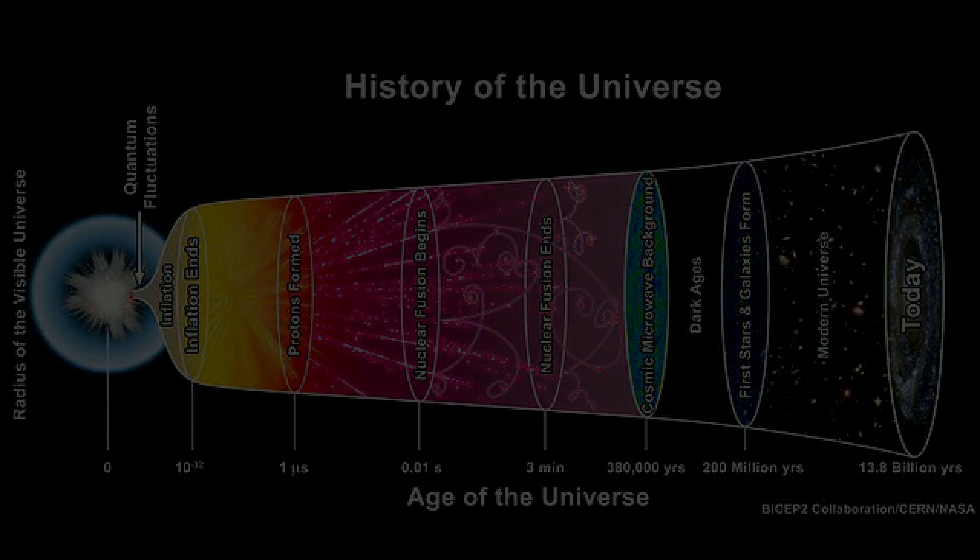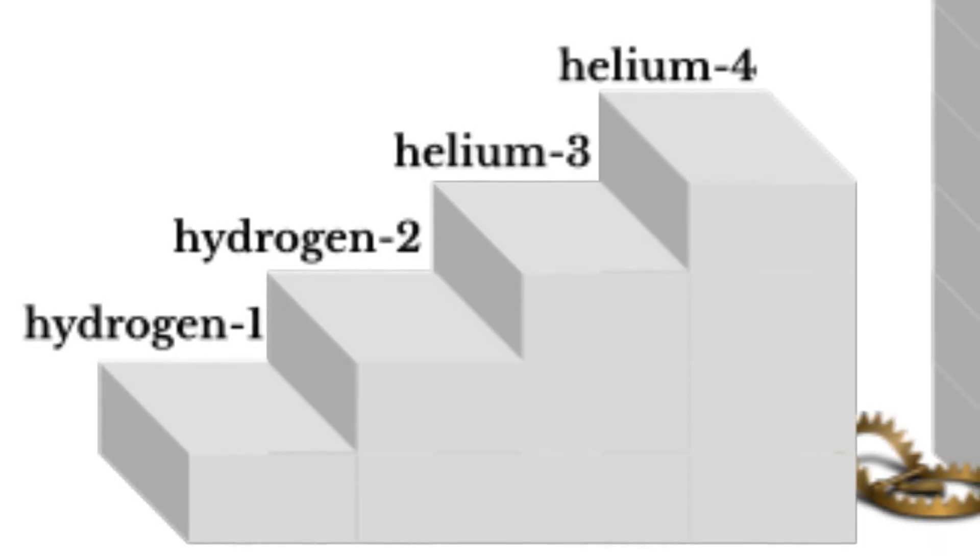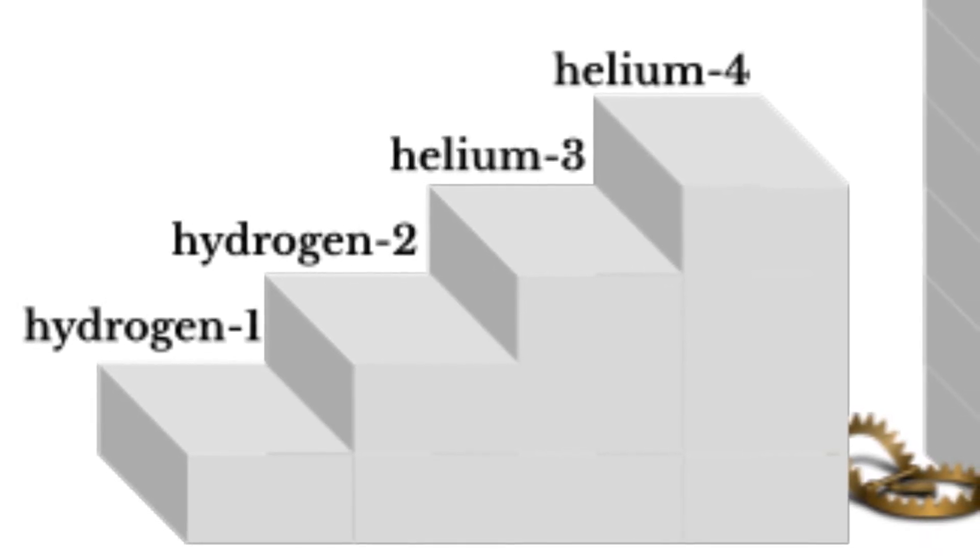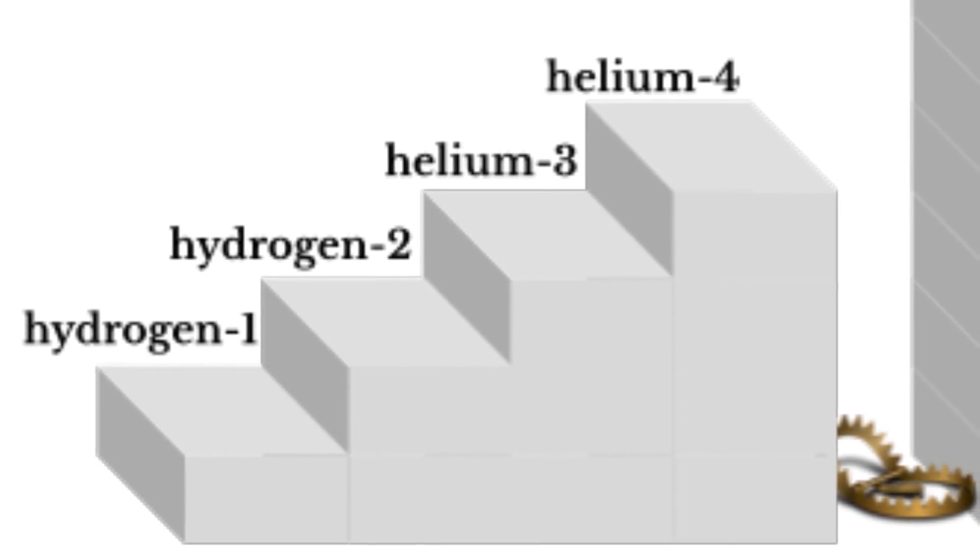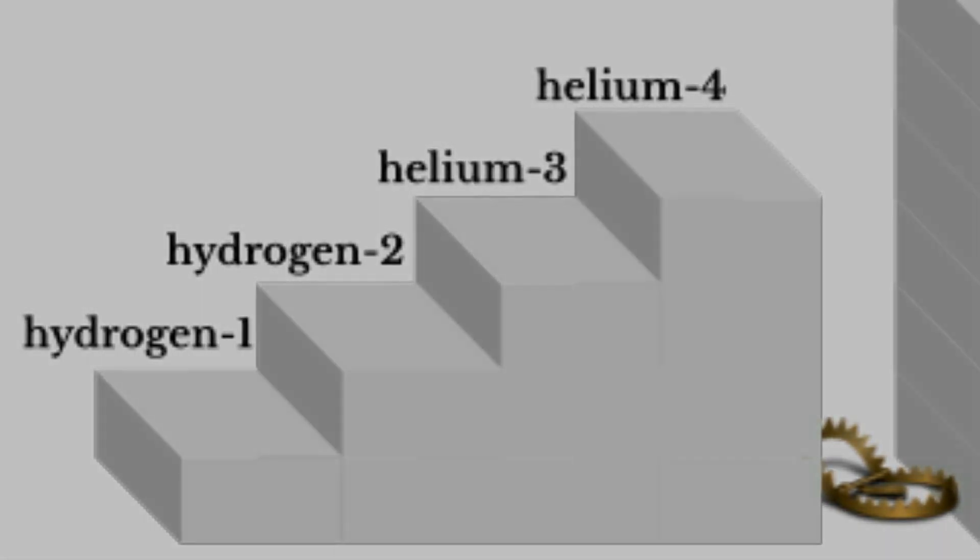Yet if alpha sub s were 11% weaker, hydrogen-2 wouldn't be stable. Hydrogen-2 plays a necessary role in fusion of stars like our sun. So with a slightly weaker strong force, again our sun doesn't shine.